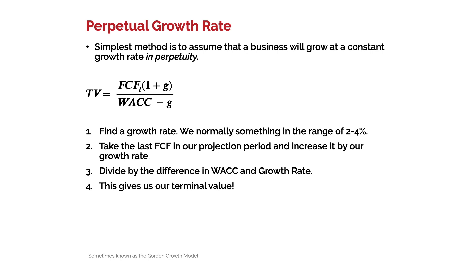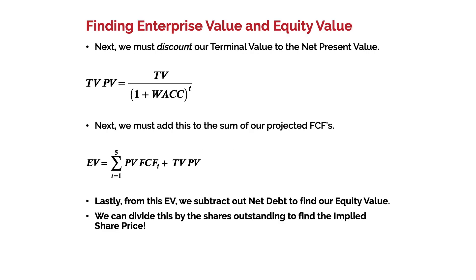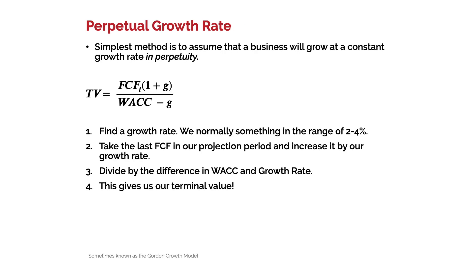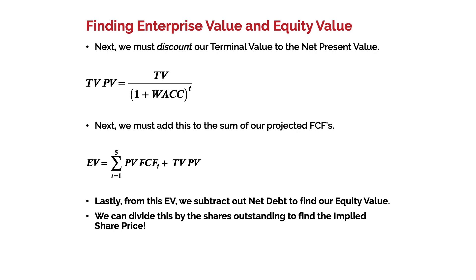Now that we have a terminal value, we discount it to find its net present value. We use our raw free cash flows — not the already discounted ones — to calculate the terminal value. The terminal value's present value is TV over one plus WACC to the T. We must add this to the sum of our projected present value free cash flows. So we take the free cash flows from year zero through five, sum all the present values, and add the present value of the terminal value. Lastly, from this enterprise value, we subtract our net debt to find our equity value, and we can divide by shares outstanding to find the implied share price.